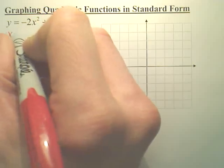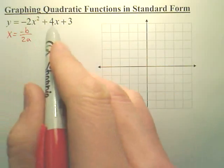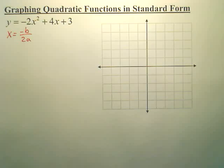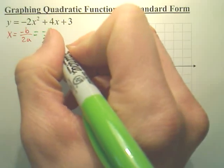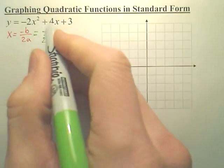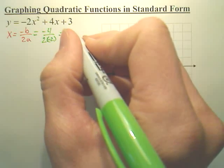is you always have to do x equals negative b over 2a. Remember this is a, b, c. So that would be the opposite of 4 over 2 times negative 2, which ends up giving you 1.